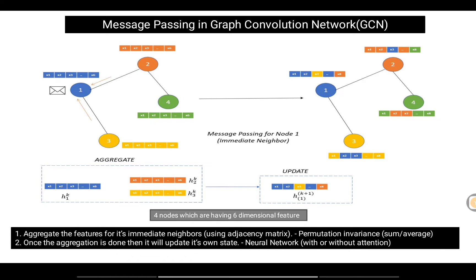In aggregation, node 1 aggregates features from its immediate neighbors using the adjacency matrix, and that aggregation is a permutation-invariant operation — typically sum or average — so node ordering doesn't matter. After aggregation, node 1 updates its own state. Starting with one color (its own features), it incorporates features from neighbors 2 and 3, so the updated feature representation also includes those colors.